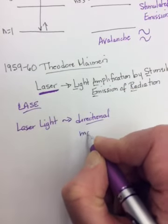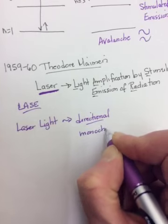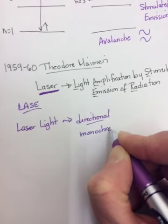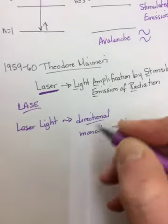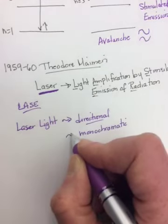The second one is it's monochromatic. One color, one wavelength. Because, remember, all of the photons that come off are in sync with each other.